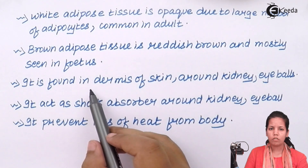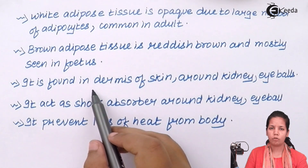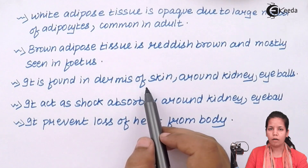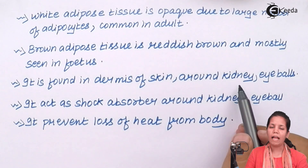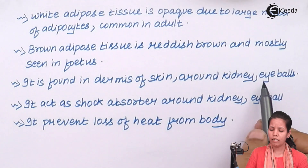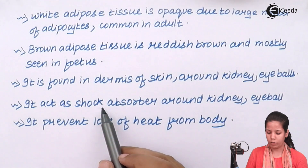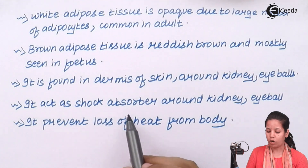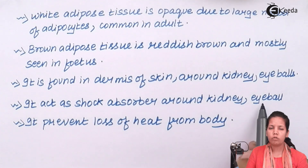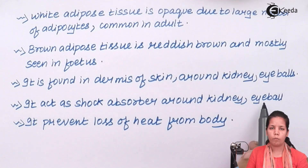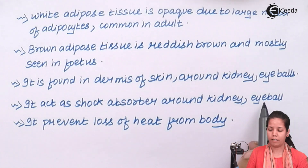Adipose tissue is commonly located in the dermis or underneath your skin, around your kidney and your eyeball. The basic function of this tissue is that it acts as a shock absorber around the kidney and around the eyeball. Whenever you splash water while playing Holi or in a garden, your eyeballs are protected because of it.